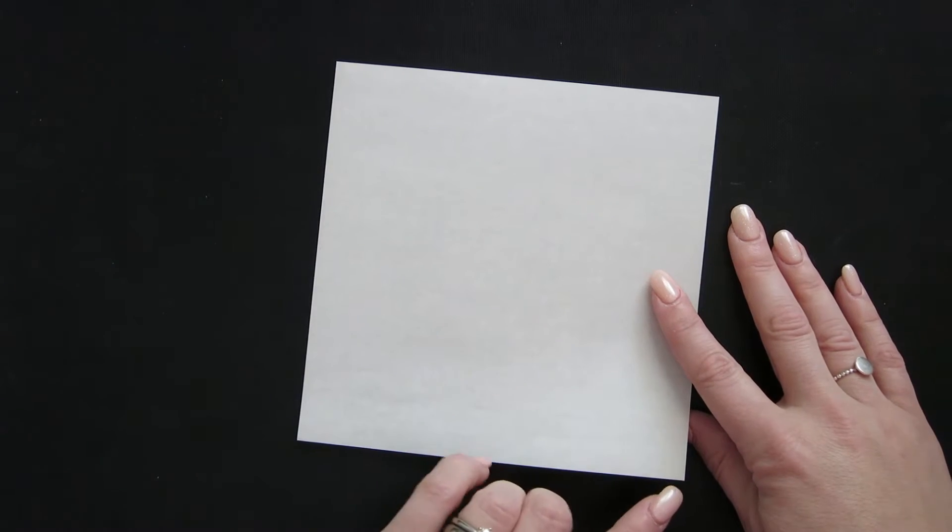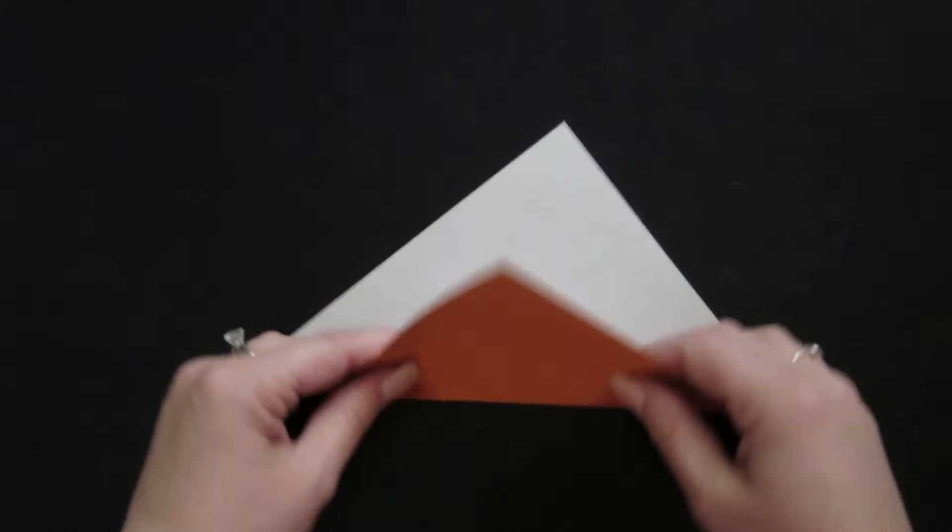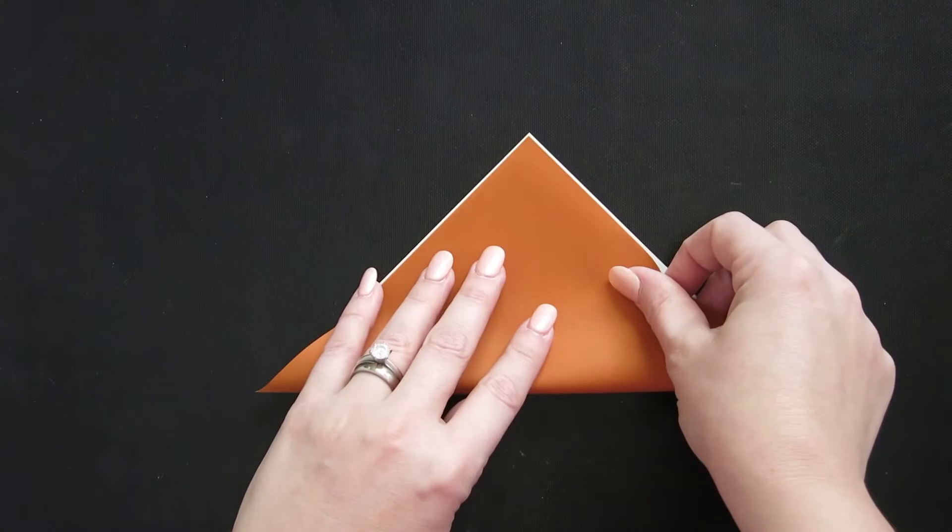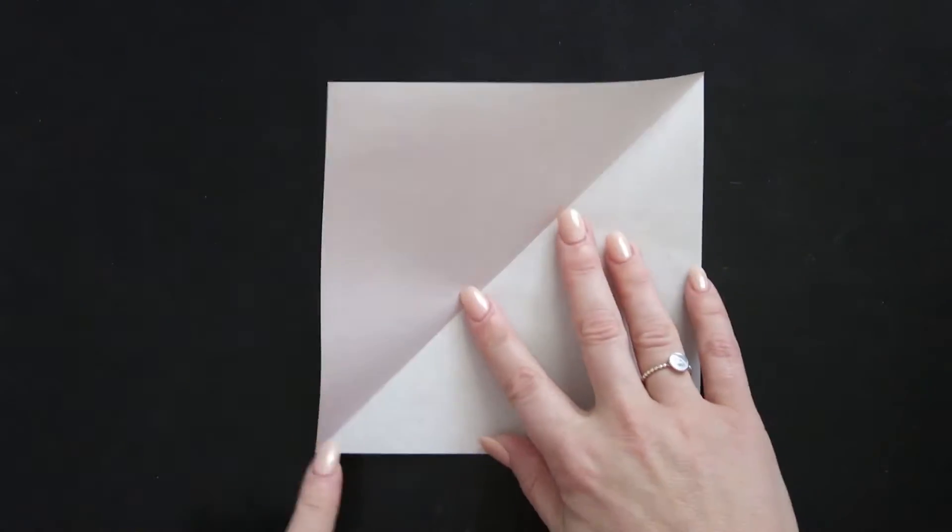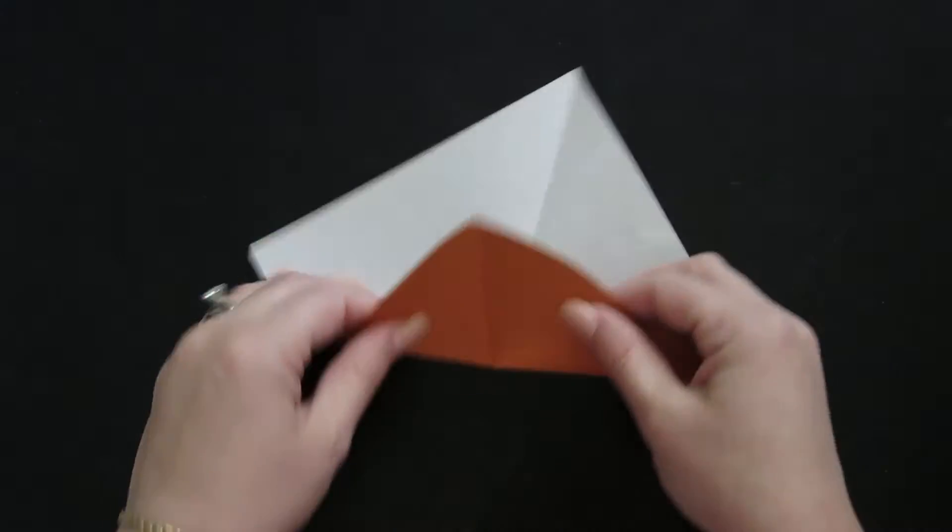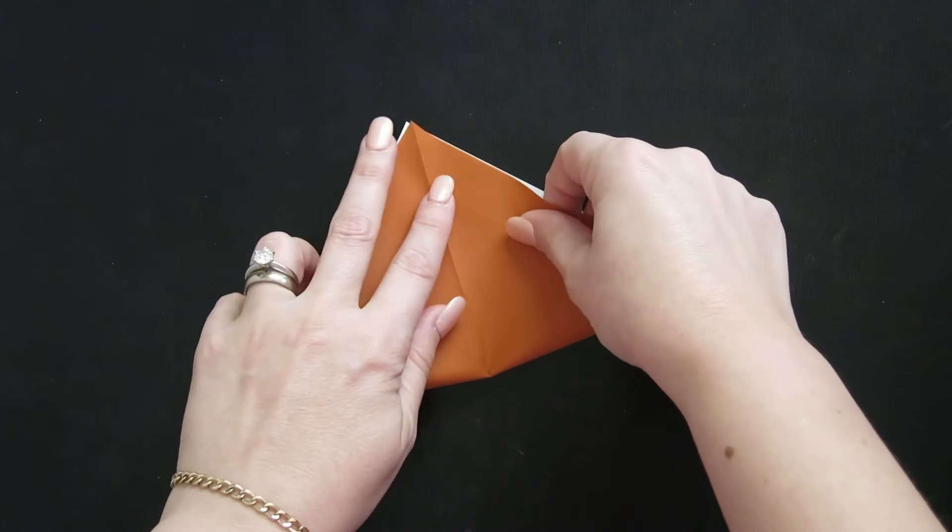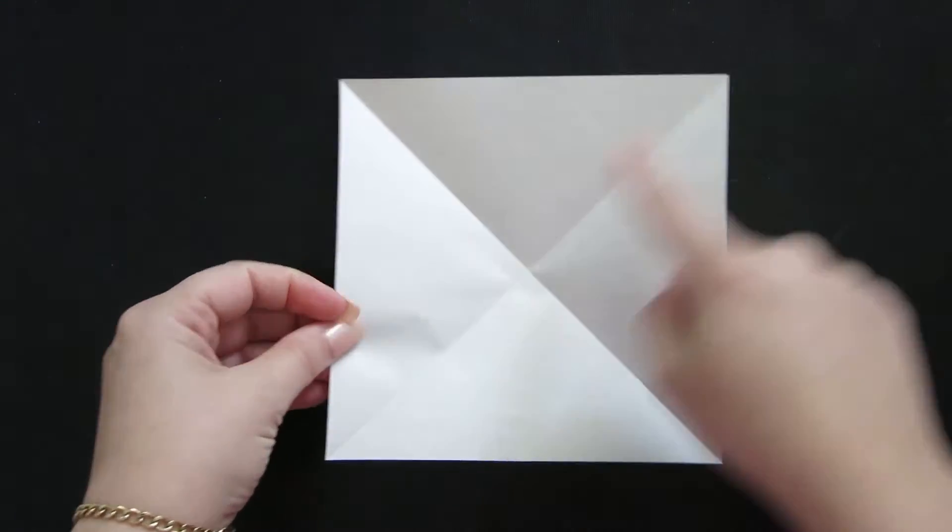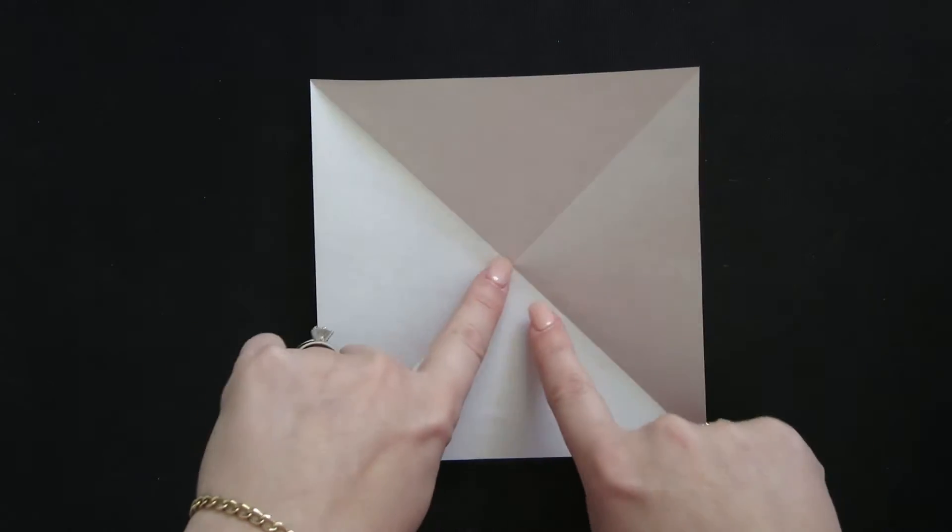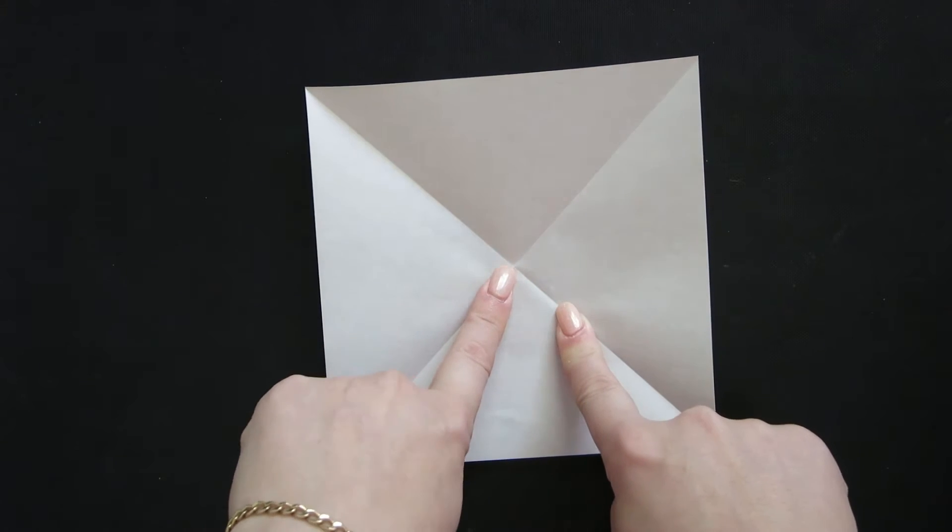We're going to take one corner of your paper, bring it up to the opposite corner. Then open it up and bring the other corner up to the opposite corner. So that when you're finished folding, you have an X marked into your paper and essentially that creates a center point.